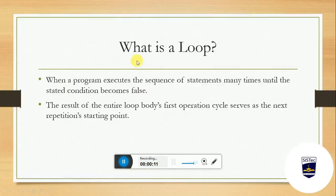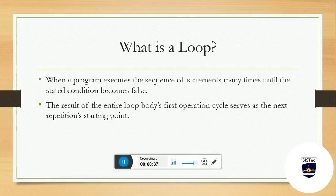So, what is a loop? When a program executes the sequence of statements many times until the stated condition becomes false — that means a block of code is executed repeatedly. This process is called a loop.